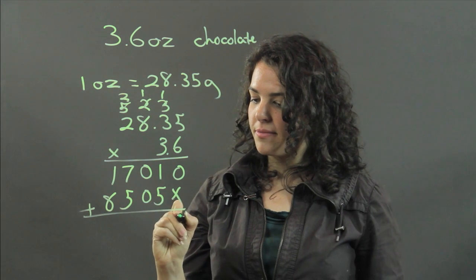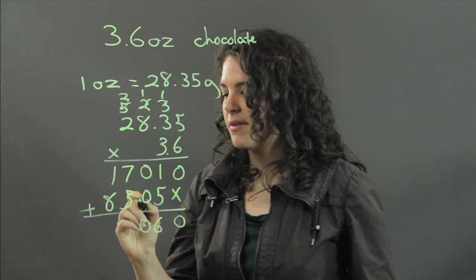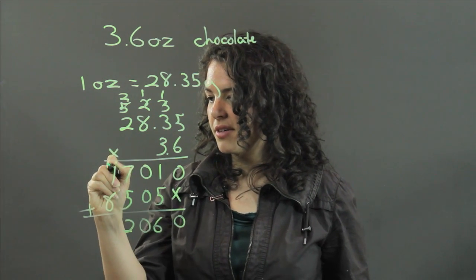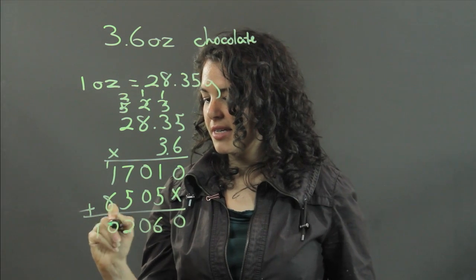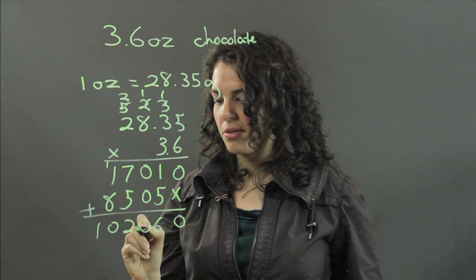Now we add these. 0, 6, 0, 7 and 5 are 12. Carry the 1. We get 10. We get 10. We have three decimal spaces. 1, 2, 3.